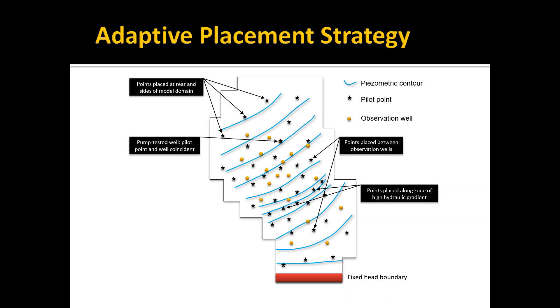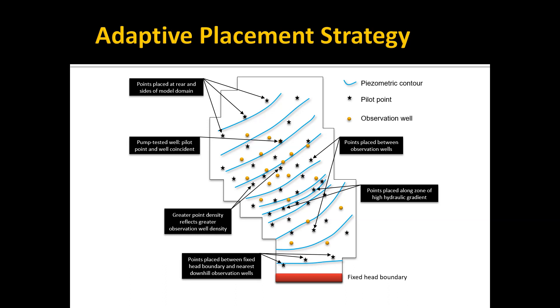If you have a place in your model where you have a strong hydraulic gradient—meaning the head contours, the heads, you'd expect them to change rapidly over a small distance—then you need to have a greater concentration of pilot points there in order to accurately capture that rapid change. If you have a location with a higher density of monitoring wells, then you need a higher density of pilot points in that location as well.